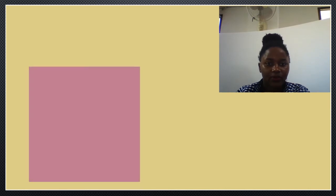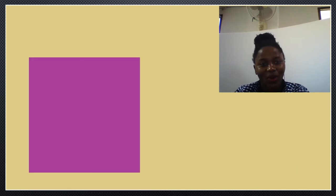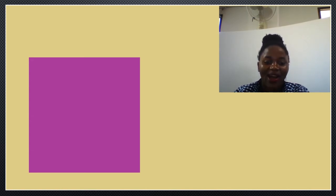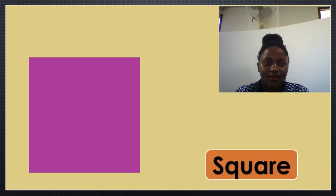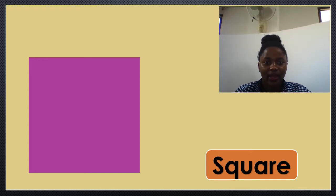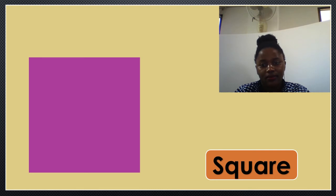How do we call this shape? Who can tell me the name of this shape? Wow! It's called a square. Square. Square. Let's spell the word square: S... Q... U... A... R... E. Square. Square. Good job!